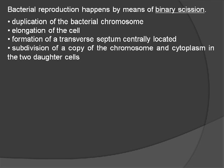Bacterial reproduction happens with a process called binary fission, in which a bacterium cell is divided into two different daughter cells. This process can be divided into the following steps.